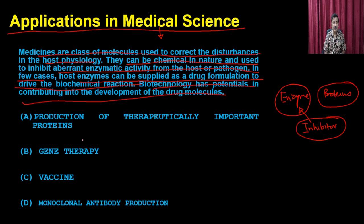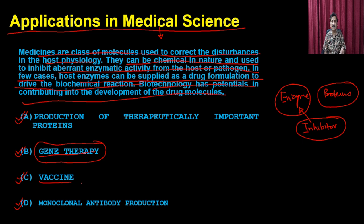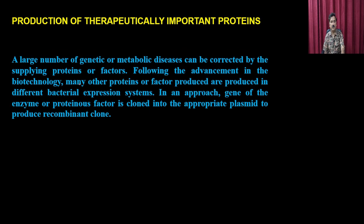In today's lecture, we are going to discuss the application of recombinant technology in four aspects: production of therapeutically important proteins, gene therapy, vaccines, and monoclonal antibody production. Gene therapy has already been discussed in the previous lecture, so we will focus on the other three topics today. Let us first start with the production of therapeutically important proteins.